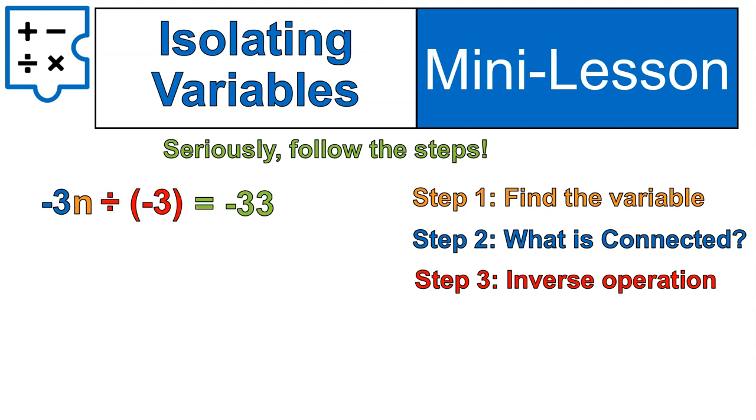And to keep the equation balanced, we have to do that to both sides, which lets us now simplify. Negative 3 divided by negative 3 gives us 1. 1 times n is n. Therefore, n is by itself on the left side of the equation.